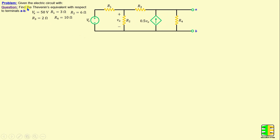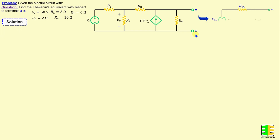The question now is to find Thevenin's equivalent with respect to terminals A and B. By applying Thevenin's Theorem between terminals A and B, we can replace this circuit with a voltage source in series with a resistor, which will be denoted as VTH and RTH.